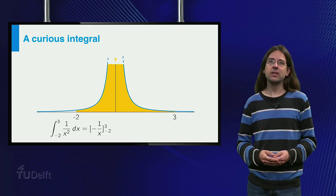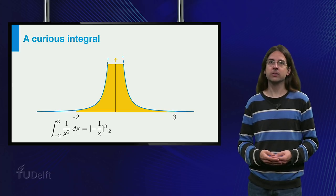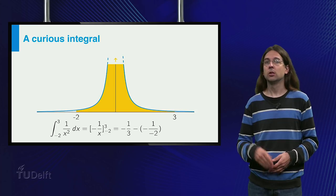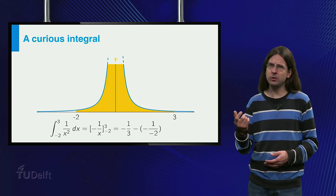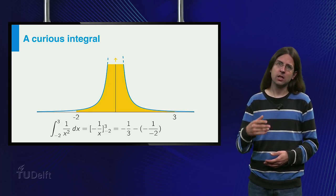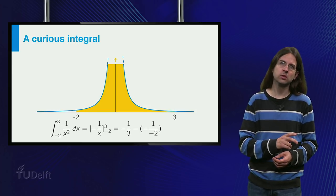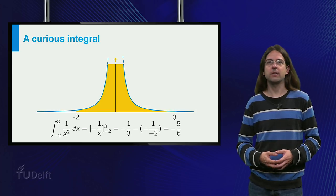Thus we see that the integral from minus 2 to 3, 1 over x squared equals plug in the upper limit minus a third, minus plug in the lower limit minus 1 over minus 2, which equals minus 5 over 6.